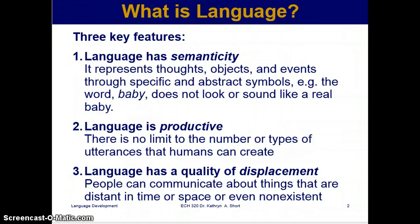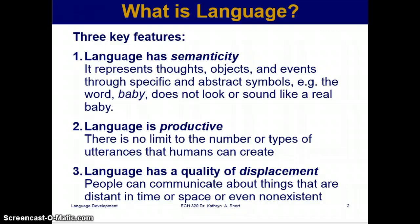Number two: language is productive — there is no limit to the number of types of utterances that humans can create. Basically, you can say anything in any language. Number three: language has a quality of displacement, meaning people can communicate about things that are distant in time and space, or even non-existent.